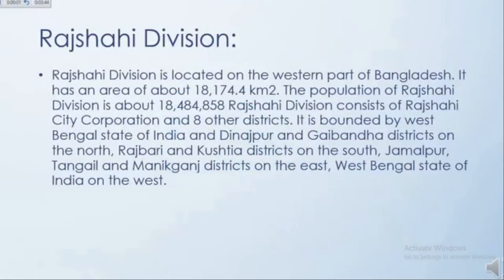Rajshahi division is located on the western part of Bangladesh. It has an area of about 18,174.4 square kilometres. The population of Rajshahi division is about 1,84,84,858. Rajshahi division consists of Rajshahi city corporation and eight other districts.